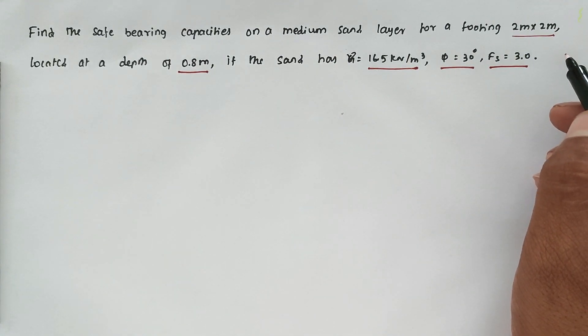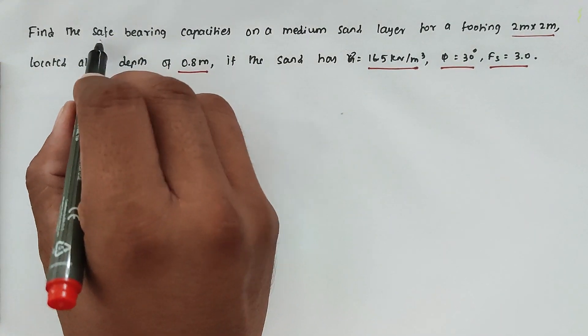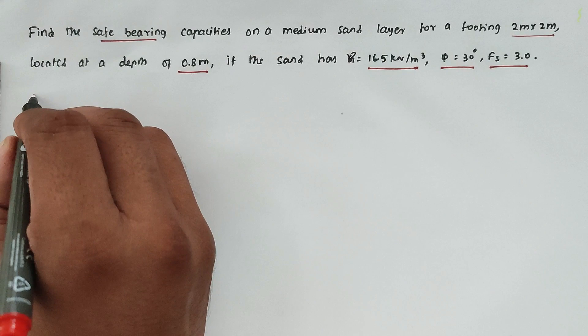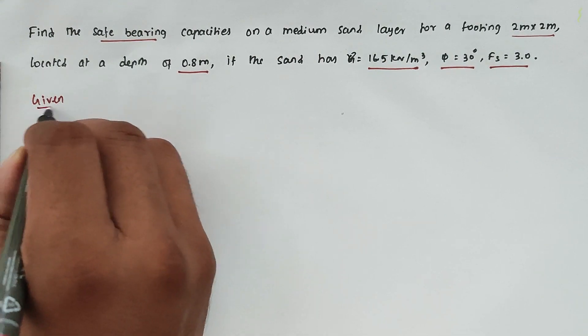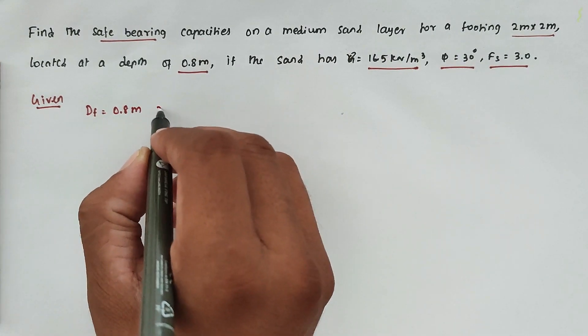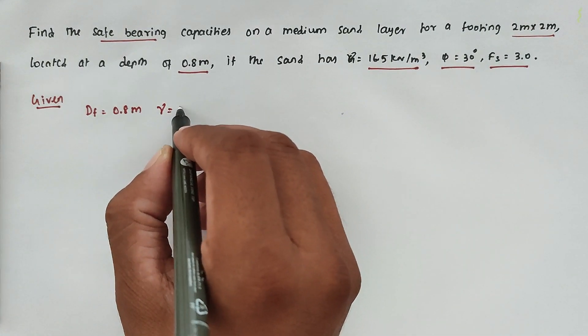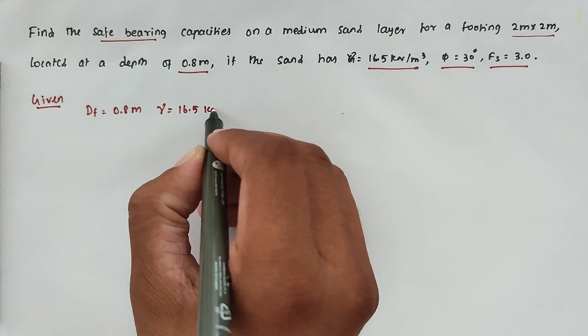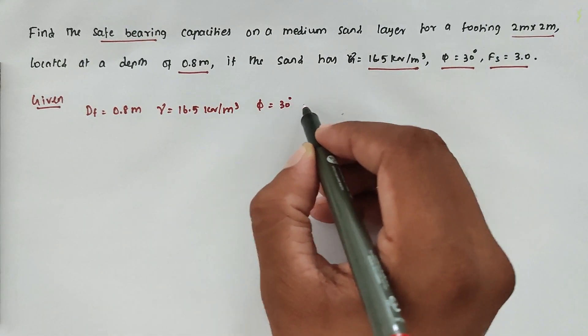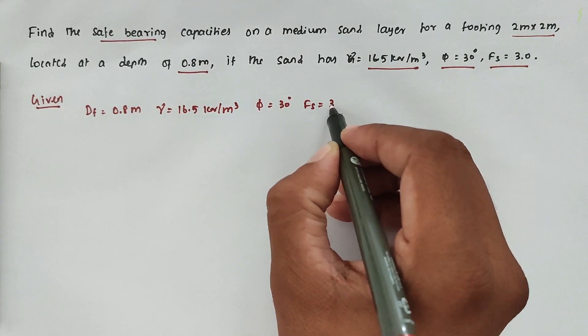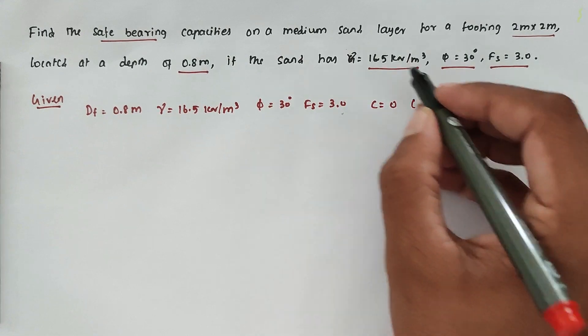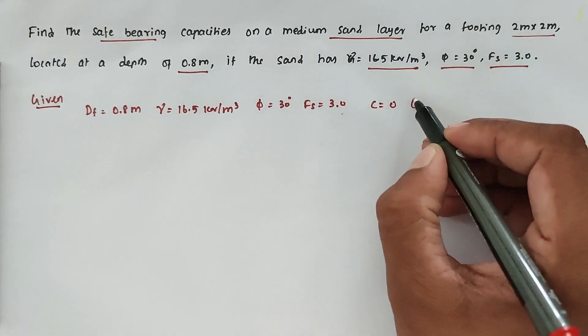So we have to find out the safe bearing capacity. Now the given values: depth of foundation Df = 0.8 meter, unit weight of soil γ = 16.5 kN/m³, φ angle of internal friction is 30°, factor of safety = 3. Now c value is 0 because it is a medium sand layer.